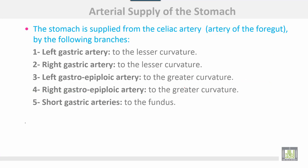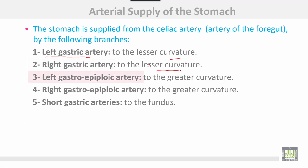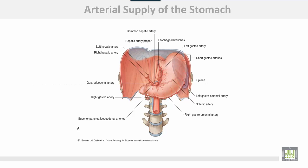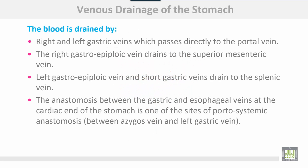Arterial supply: the stomach is supplied from the celiac trunk, the artery of the foregut, which gives the following branches: the left gastric artery to the lesser curvature, the right gastric artery also to the lesser curvature, the left gastro-epiploic artery to the greater curvature, and the short gastric arteries to the fundus. Anastomosis occurs within the gastric wall — at the cardiac end there is free anastomosis between gastric and esophageal arteries, and at the pyloroduodenal junction between gastric and duodenal arteries.